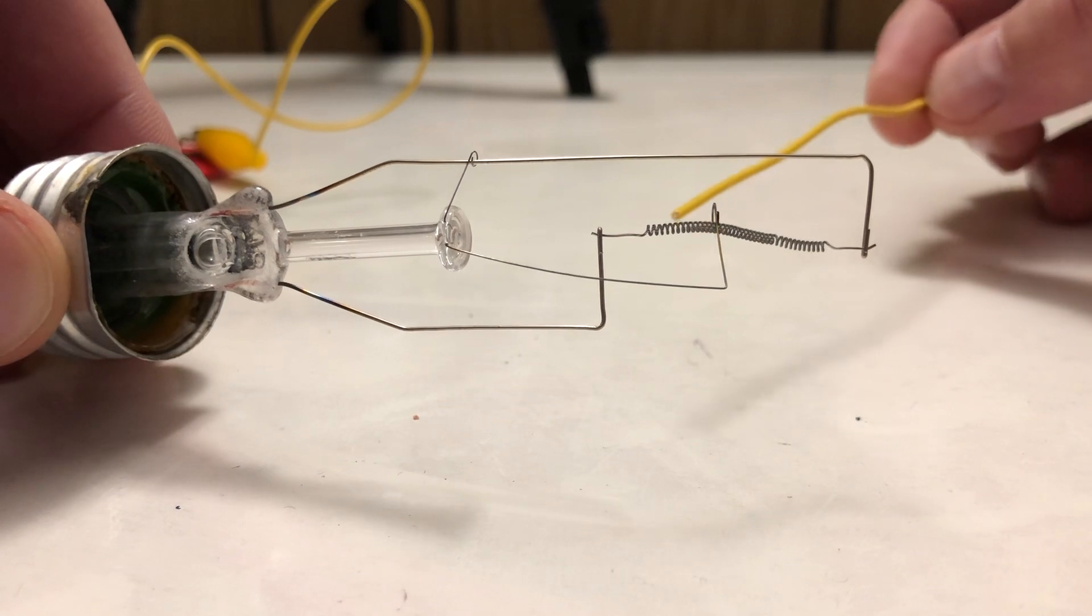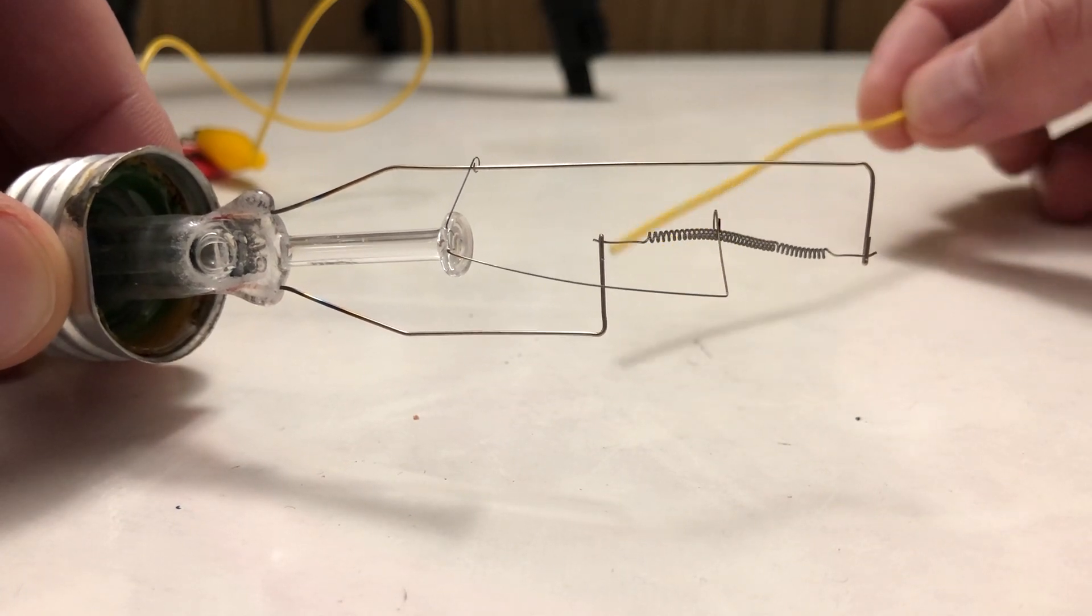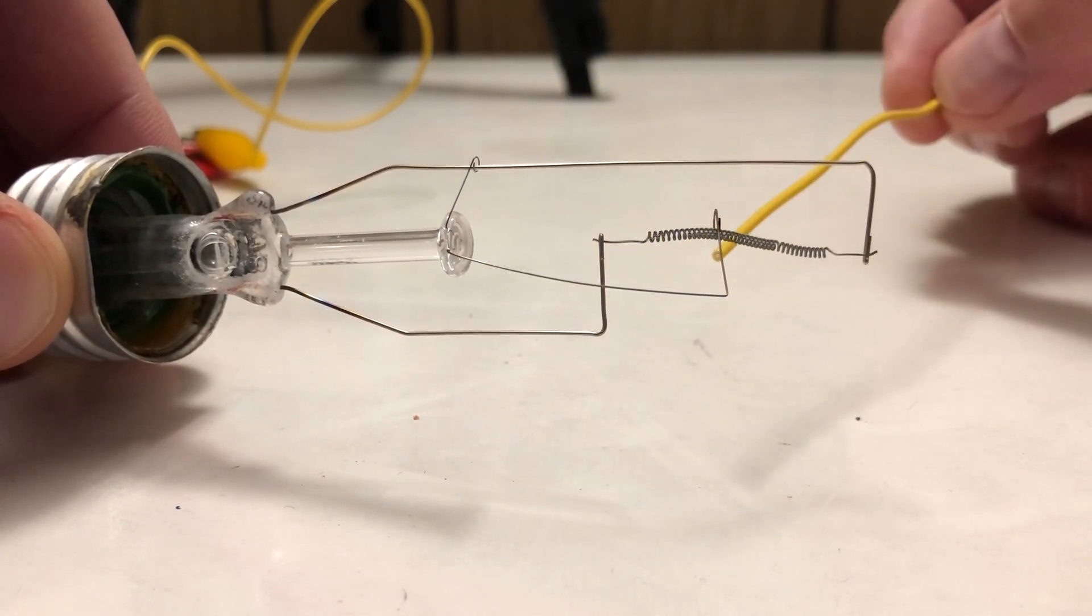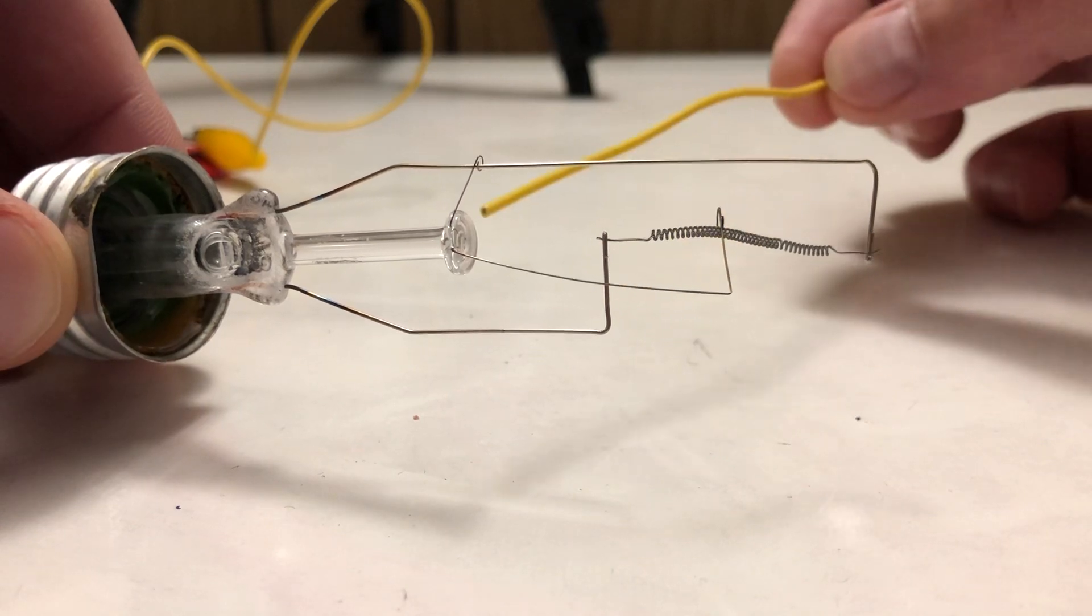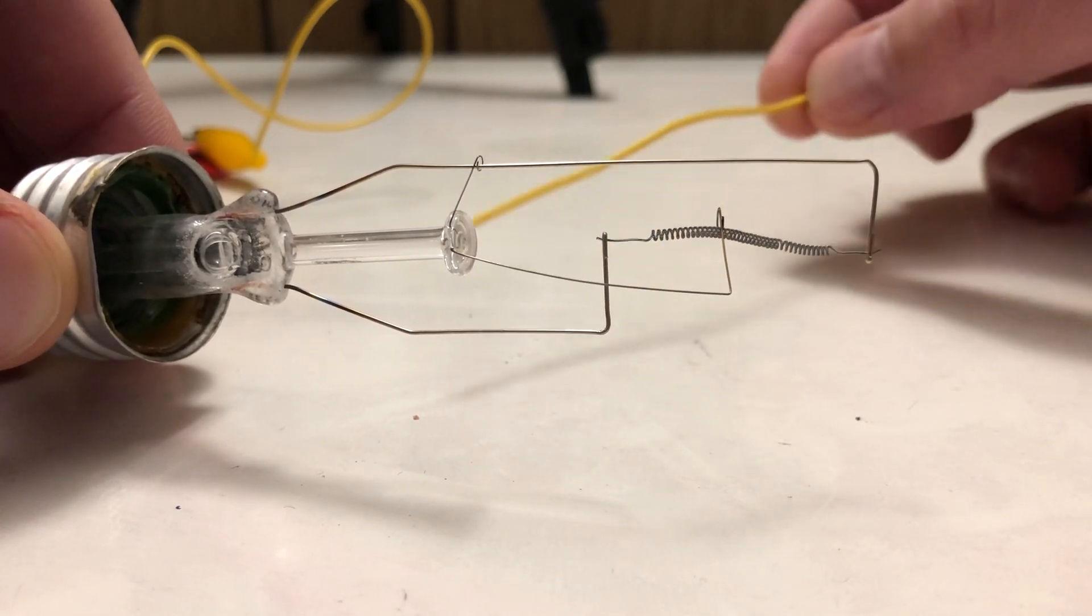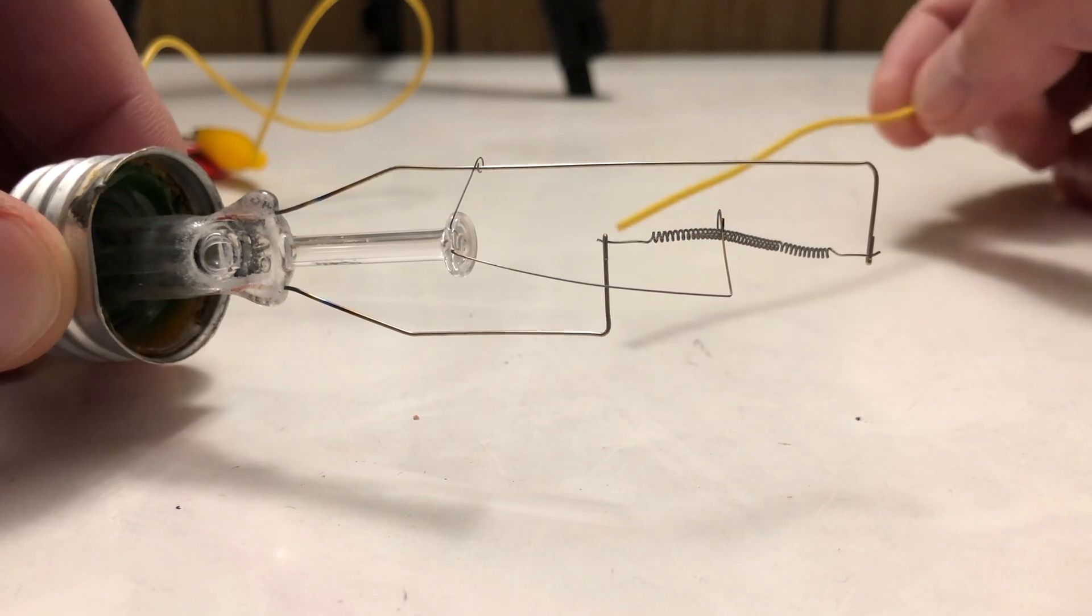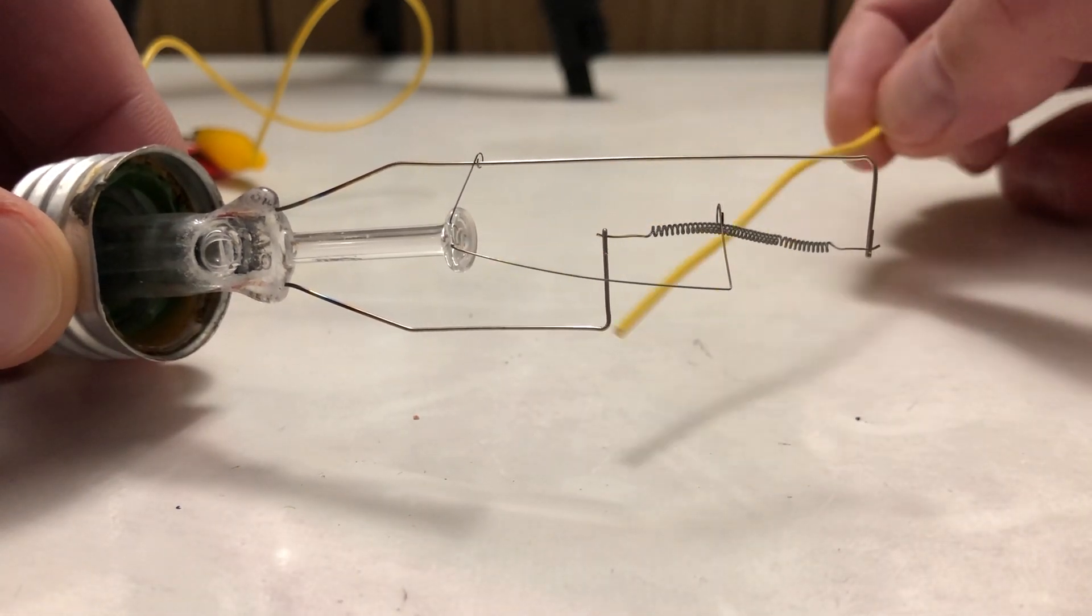Those are the major structures inside the bulb. There is this other tiny wire here that's connecting to hold everything in place. Its purpose is just to hold everything in place, and it doesn't have a part to do with the actual conduction of the circuit.